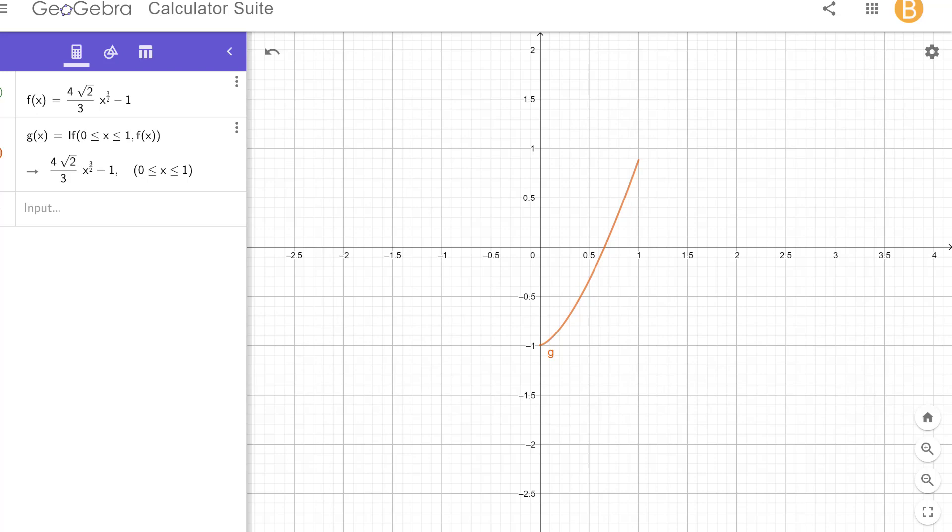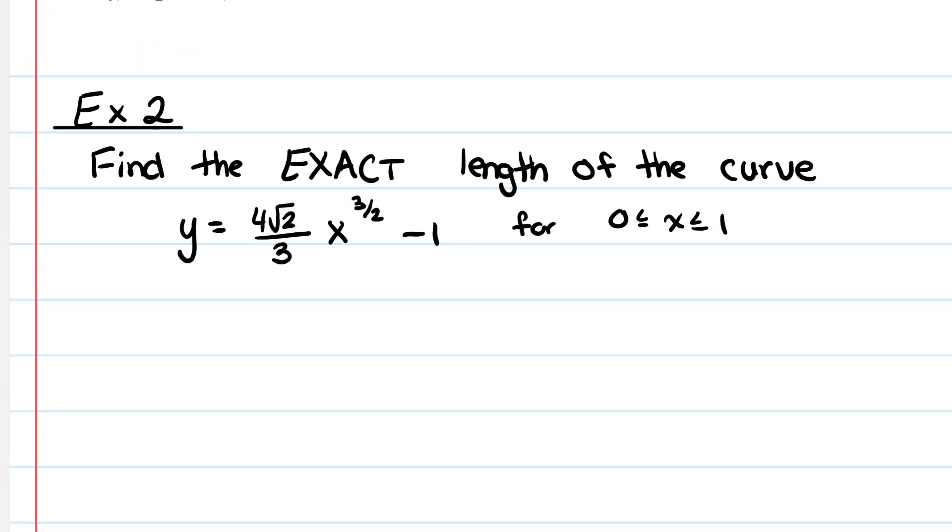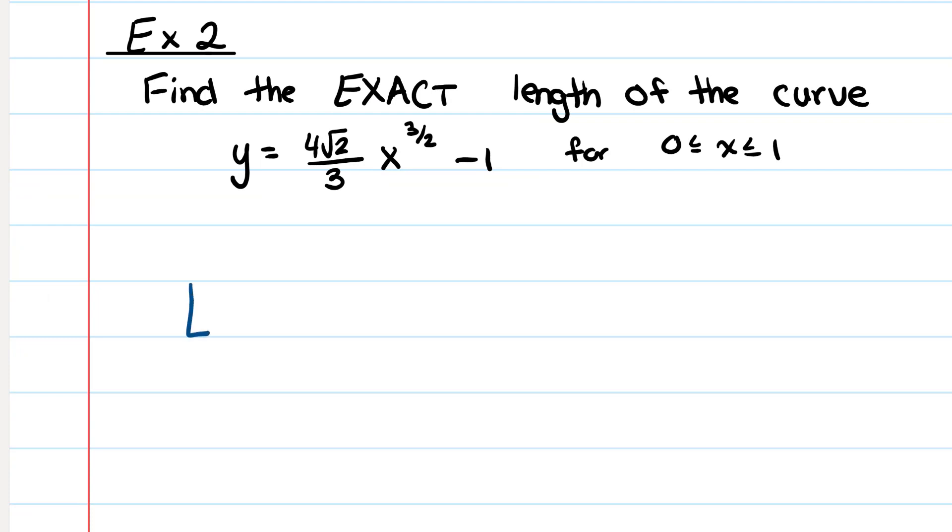It's important to make sure there's no cusps, corners, or breaks. So what we're going to do is write down our formula which is L equals the integral from a to b, square root of 1 plus dy dx squared.